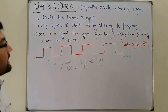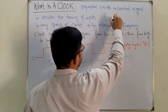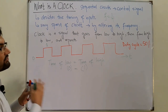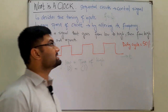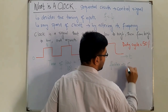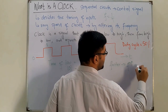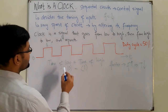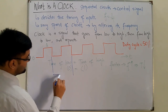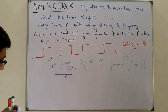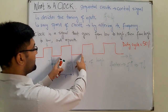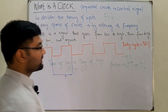The frequency is given by one over the time period. If you want to make the circuit faster, you have to increase the frequency, which means you have to decrease the time period. The time period is the time after which the cycle repeats itself — you can measure it from any corresponding point in consecutive cycles.